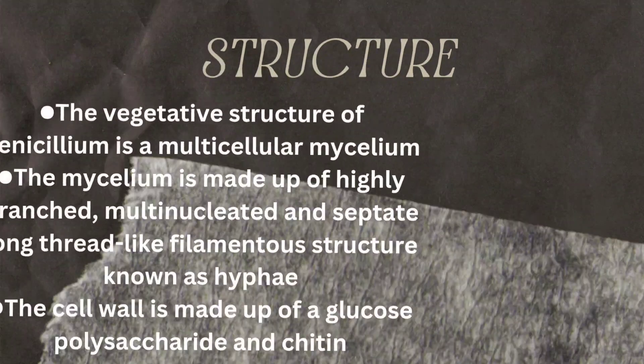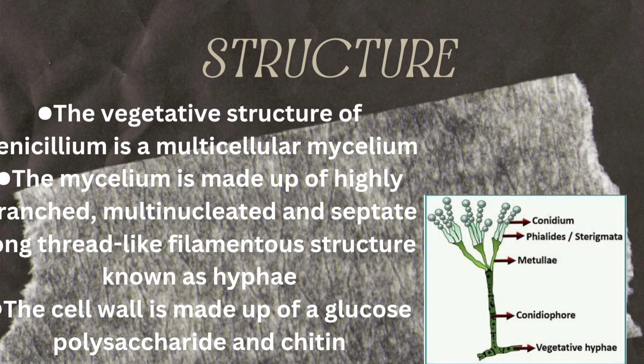Next, we will talk about the structure — you can see in the diagram. This is a vegetative structure. Penicillium is multicellular and is made up of hyphae. Mycelium is made up of highly branched, multinucleated hyphae with septa — these are thread-like filamentous structures made up of filaments. The cell wall is made up of glucose, polysaccharides and chitin.